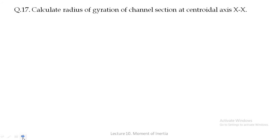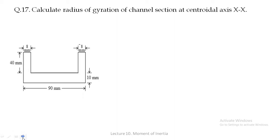So what does this numerical state? Calculate the radius of gyration of a channel section at the central axis XX. They have given the diagram and asked us to find the radius of gyration. When radius of gyration is to be found, we need to find the Moment of Inertia also, because radius of gyration equals the square root of Moment of Inertia divided by the area of the plane.